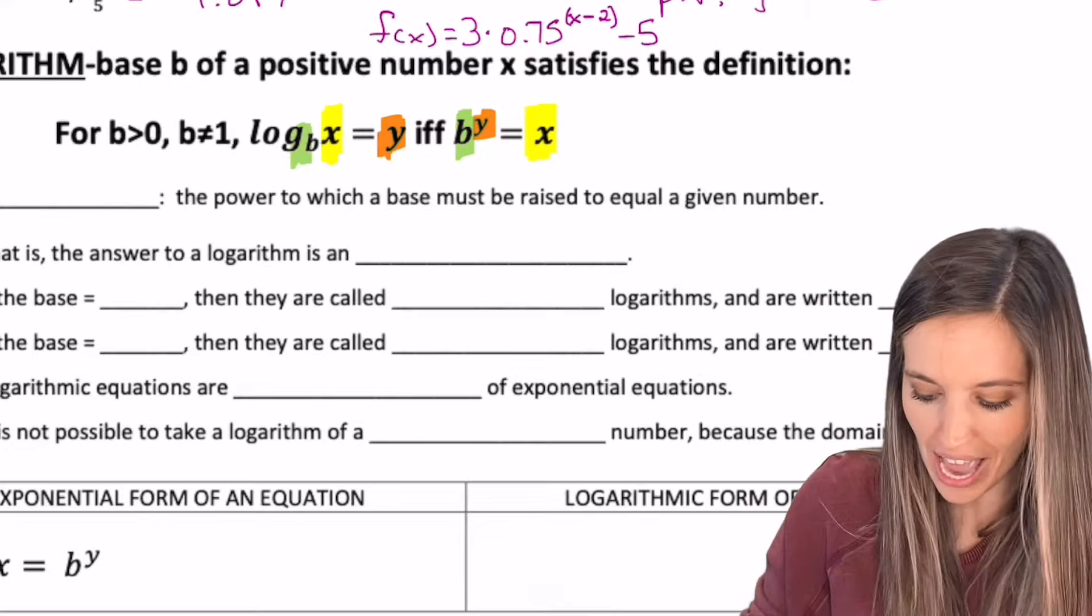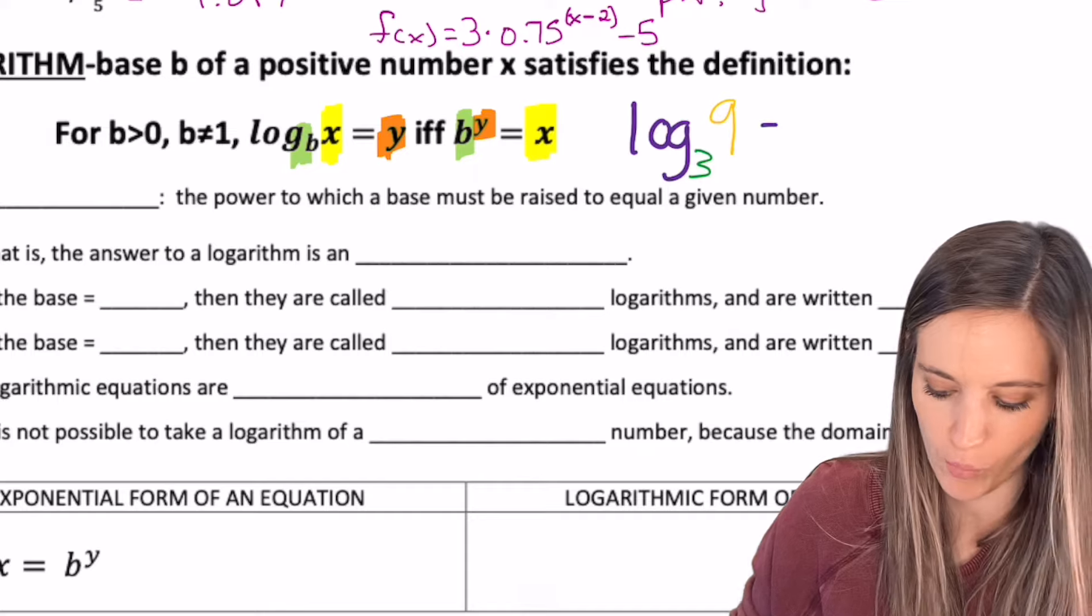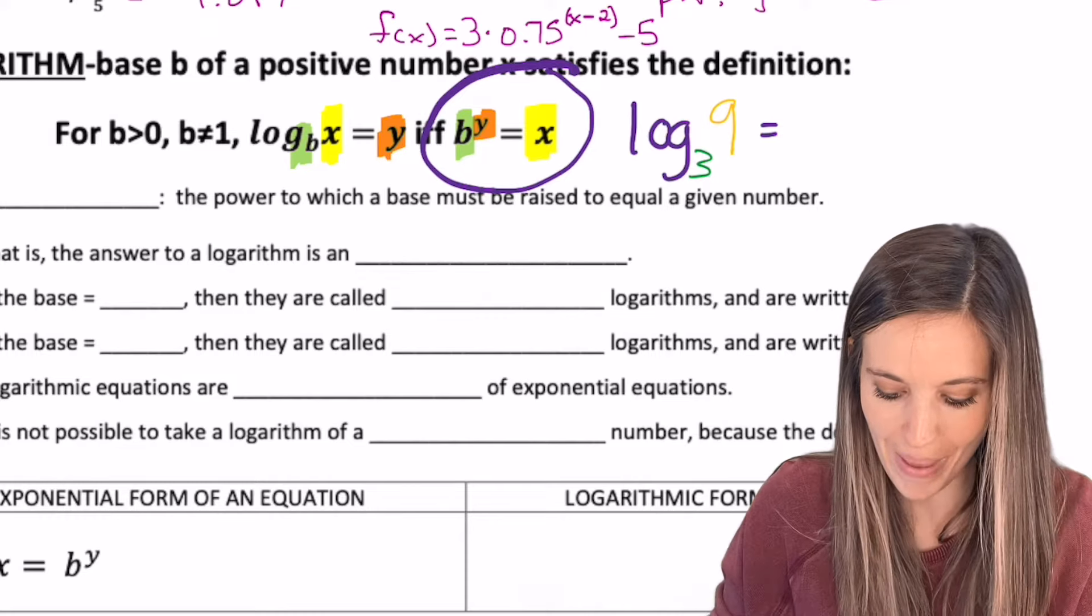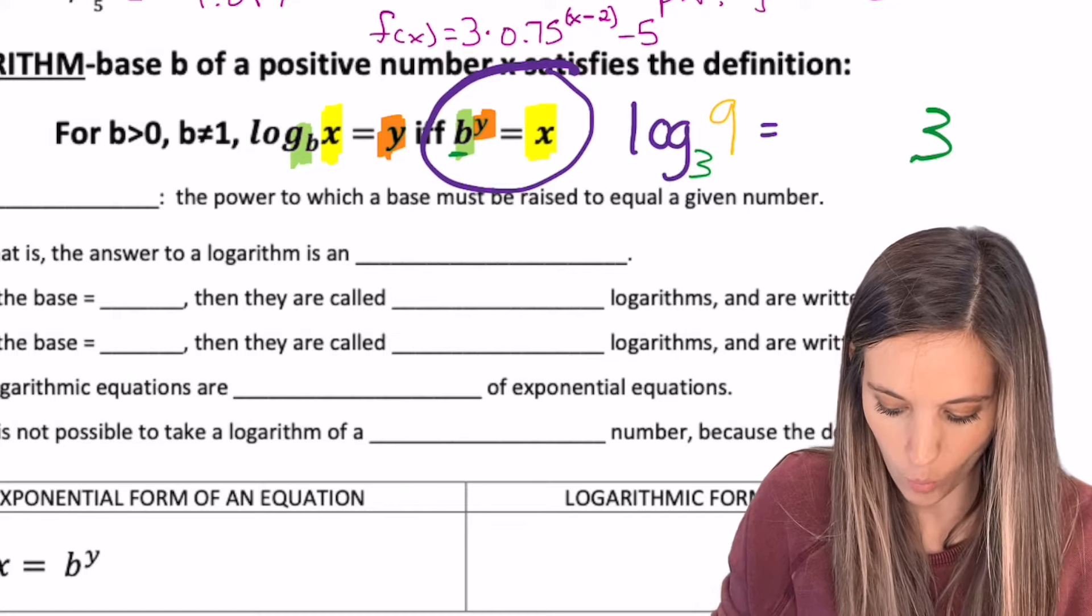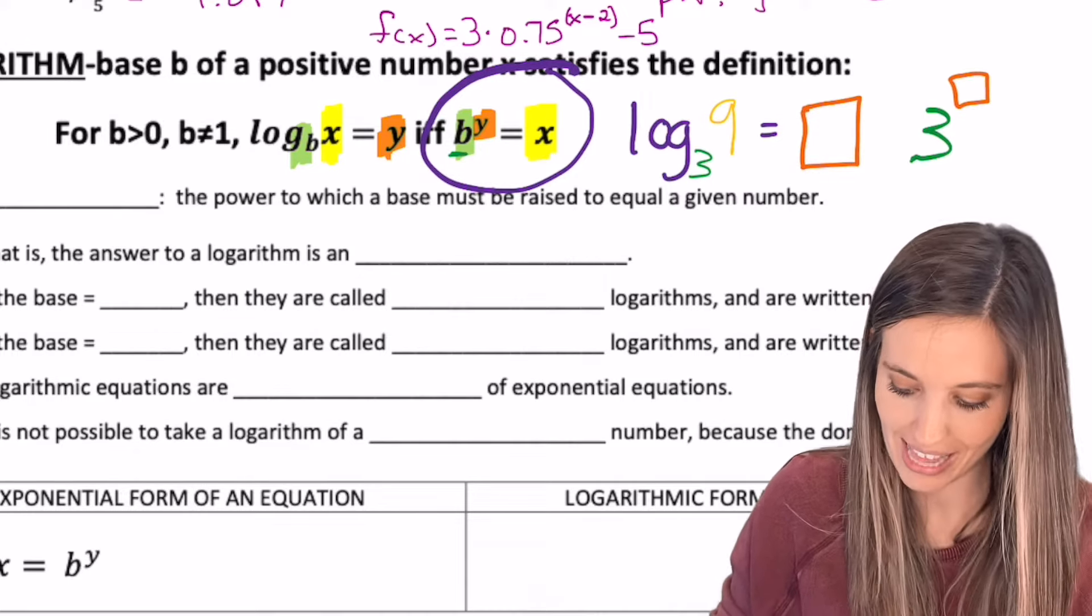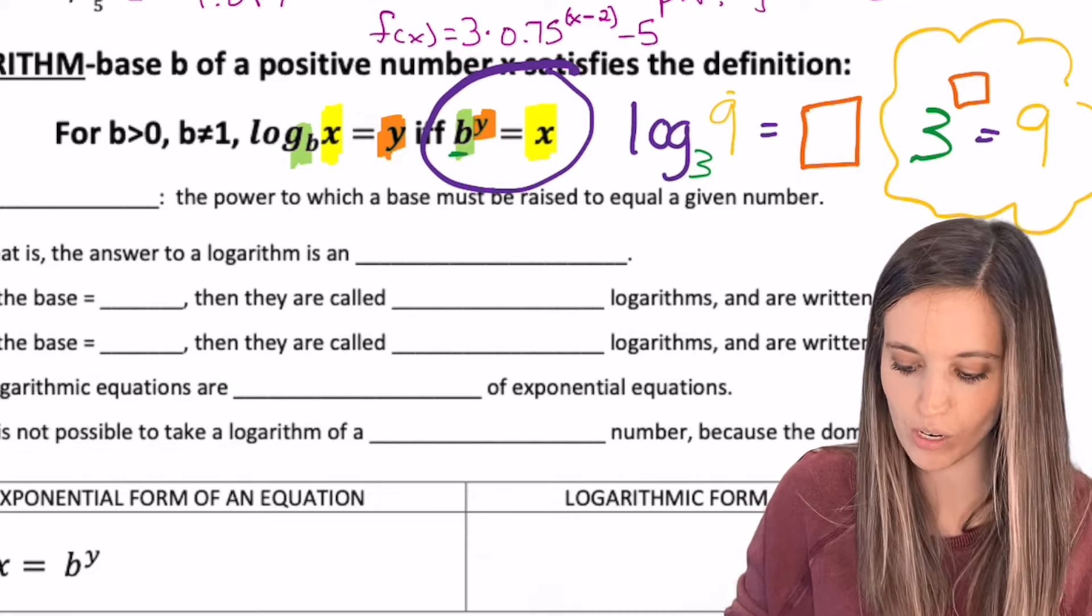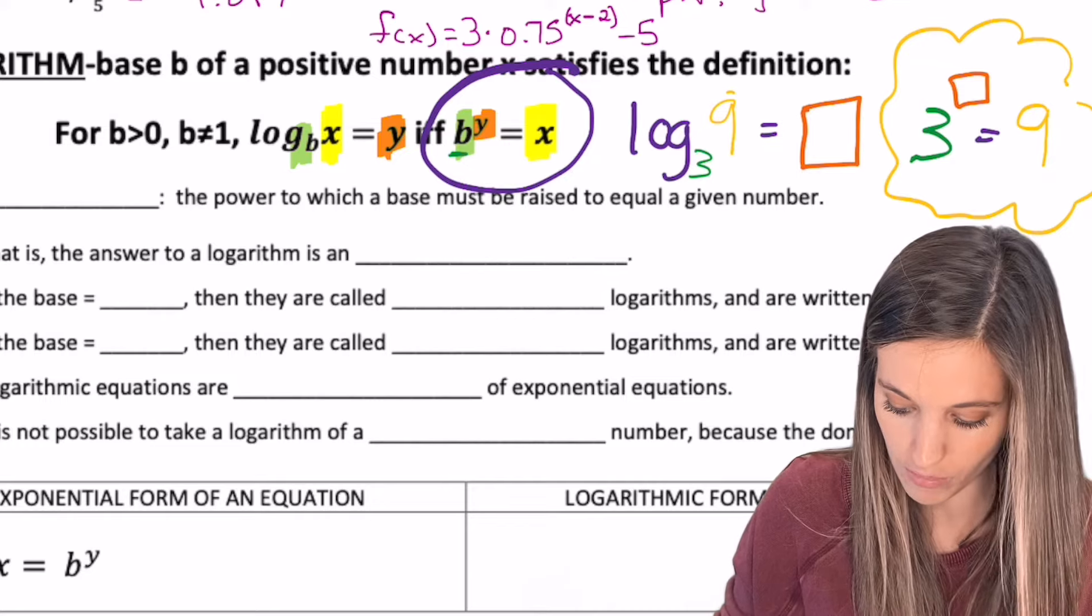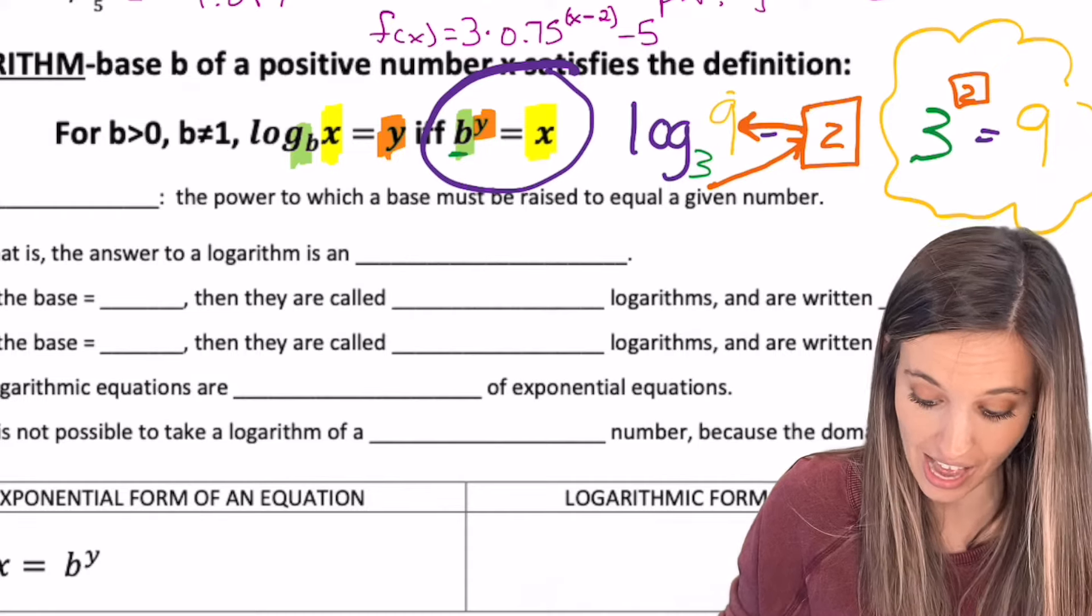Interesting. Let's say we have log base 3 of 9 and we want to determine what this equals. Well, what are these numbers' positions in the exponential form? The base is 3 right there. And then the y would be my answer here. So I don't know what my power would be, and that's equal to what's inside my log. So 9. Well, look at that. I can totally determine this. 3 to what power is 9? Well, 2. So I know the answer to my logarithm is 2 because 3 to the second power is 9.